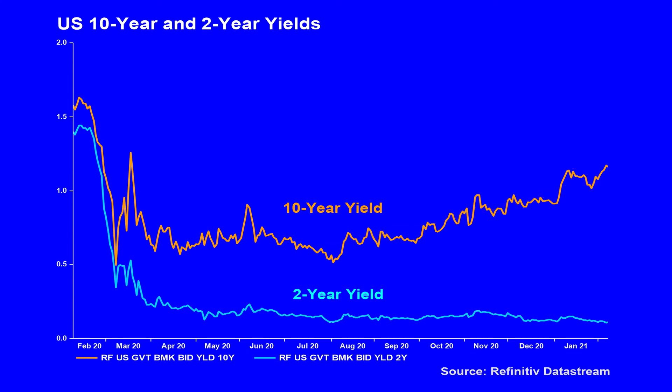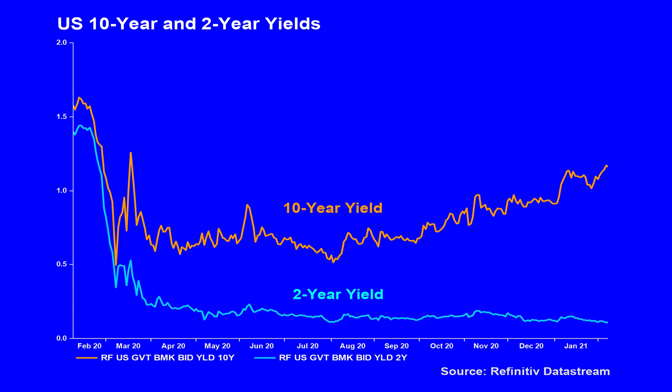In fact, what we can see with this chart is that the 2-year yield has been retesting the lows — in this case the all-time lows — whilst the 10-year yield has been rising. They're telling two very different stories.